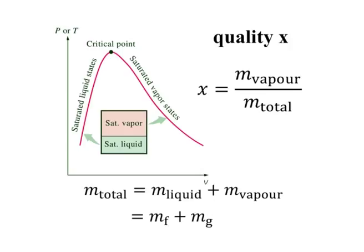Quality has significance for saturated mixtures only. It has no meaning in the compressed liquid or superheated vapor regions. Its value is between 0 and 1. The quality of a system that consists of saturated liquid is 0, or 0%, and the quality of a system consisting of saturated vapor is 1, or 100%. In saturated mixtures, quality can serve as one of the two independent intensive properties needed to describe a state. Note that the properties of the saturated liquid are the same whether it exists alone or in a mixture with saturated vapor. During the vaporization process, only the amount of saturated liquid changes, not its properties. The same can be said about a saturated vapor.